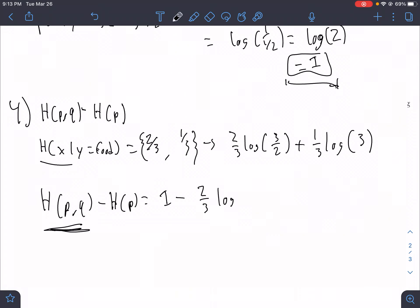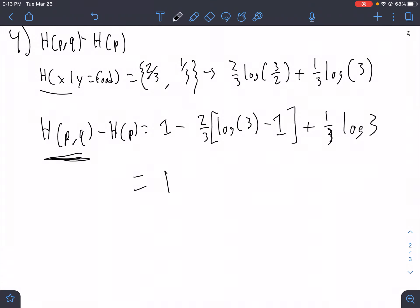And we subtract our other thing, so two-thirds log three over two. I'll simplify that on the go. Two-thirds log three minus one plus one-third log three. So this equals... Well, this is one minus two-thirds times that, so it's actually five-thirds minus... And that's two-thirds log three plus one... Or, that's not a plus. It should be minus. So two-thirds log three and one-third log three. So it's five over three minus log three.